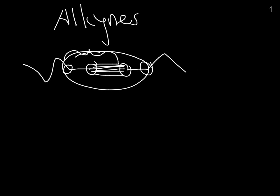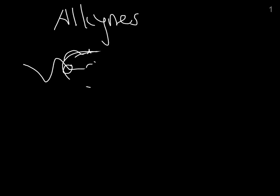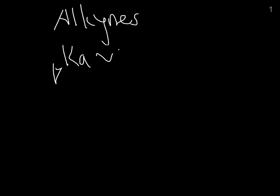The first reaction we're going to look at is just some basic acid-base chemistry. Now alkynes, if you haven't memorized this already, have a far lower pKa than alkenes and alkanes. Alkanes are about 50, alkenes are about 45 — they're slightly more stable. And alkynes have a pKa of about 25, because that triple bond can provide some resonance stabilization.